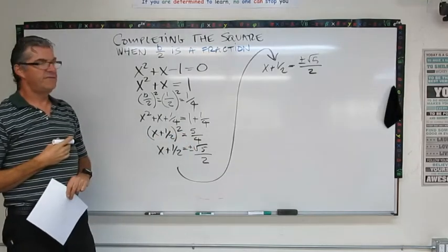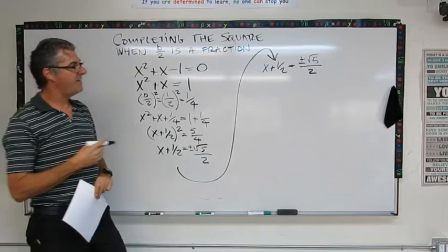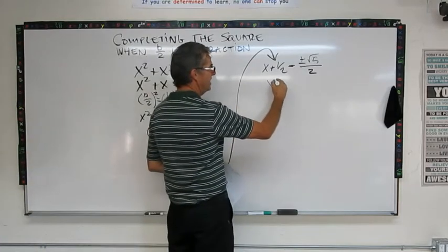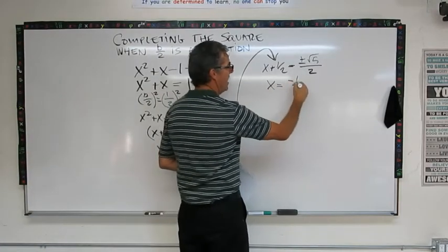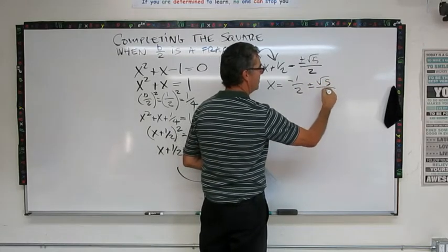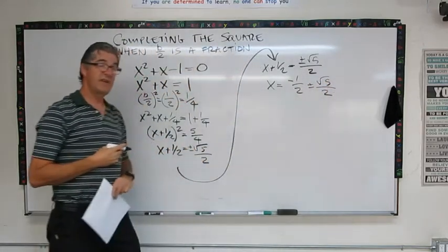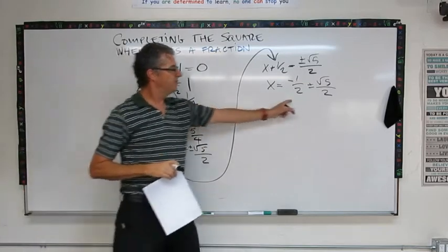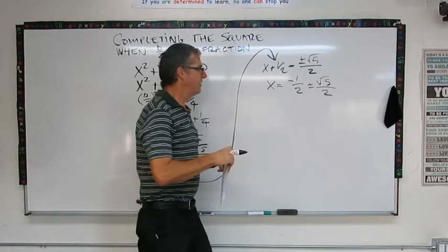I still don't have x alone. I have to move my half over to the other side. So now I'm going to get x equals negative 1 half plus minus root 5 over 2. Now this is a nice one because both terms are over 2, so I can just combine them.